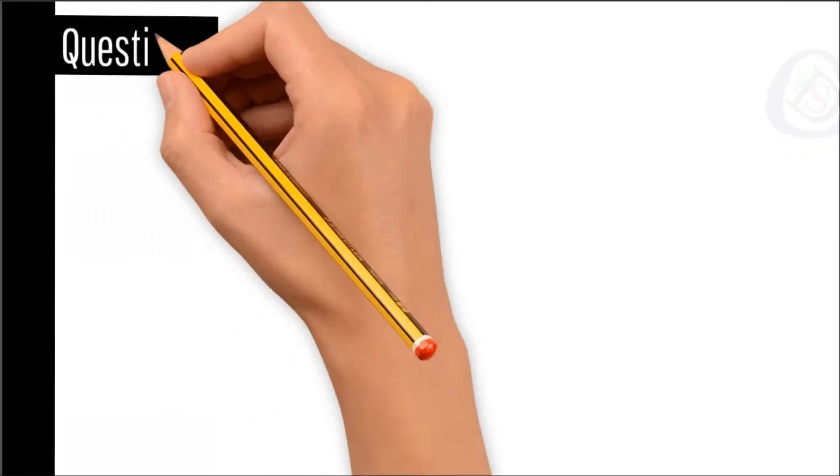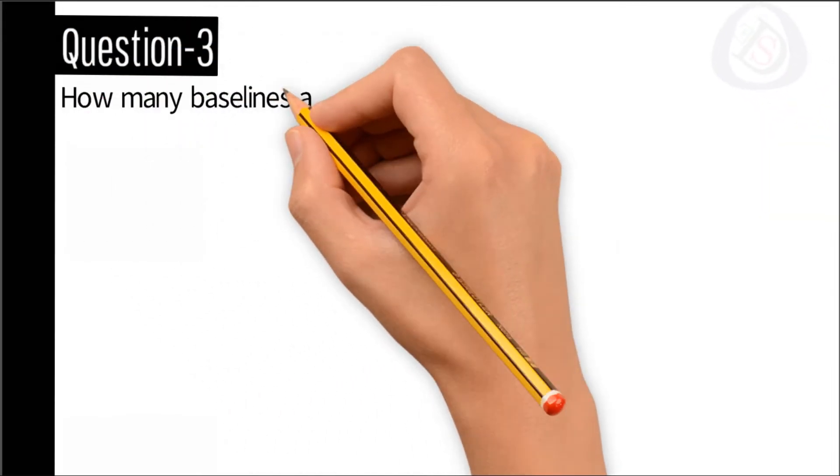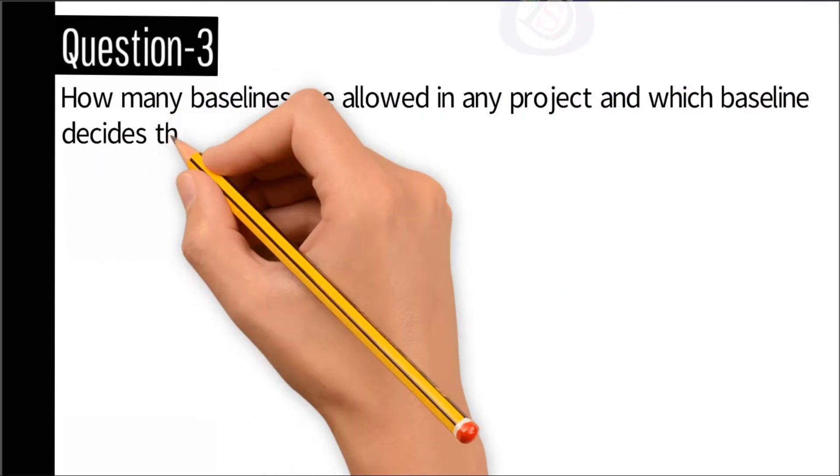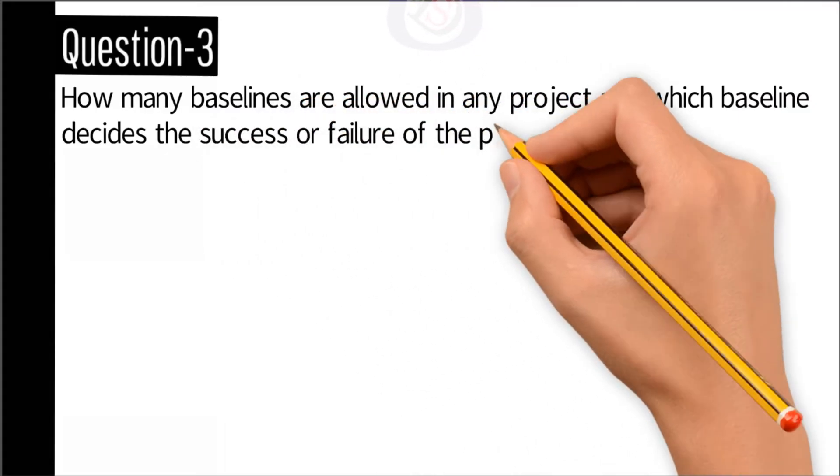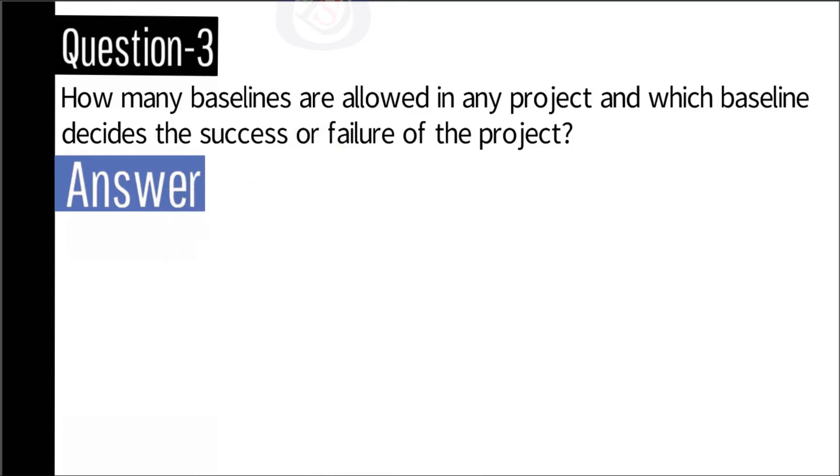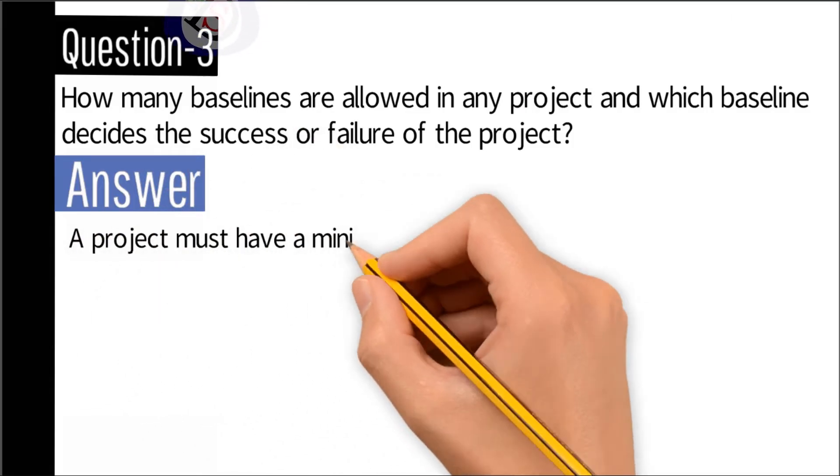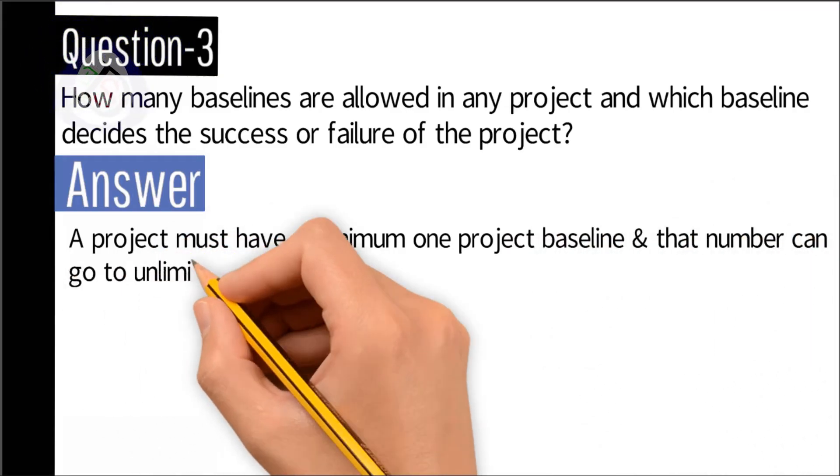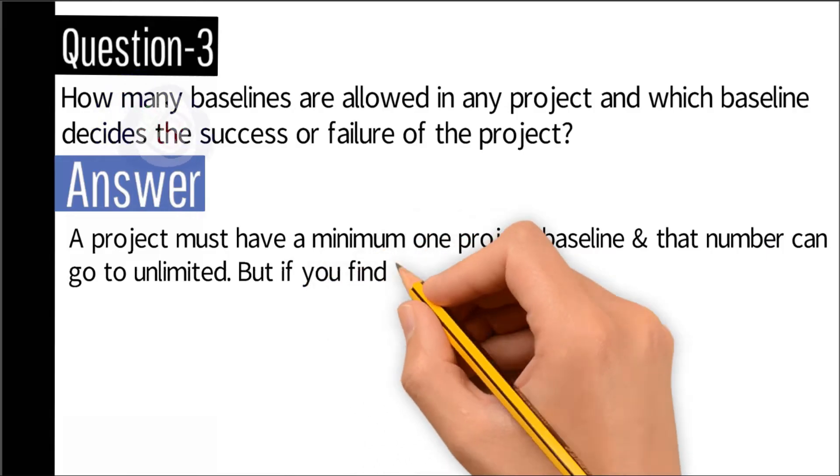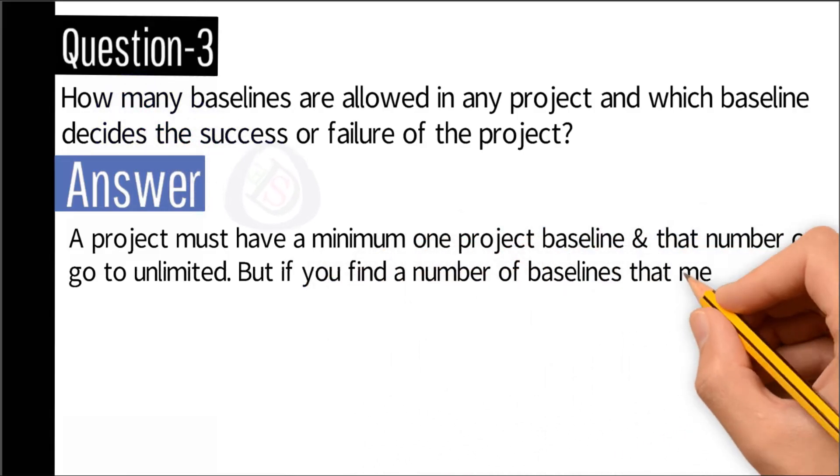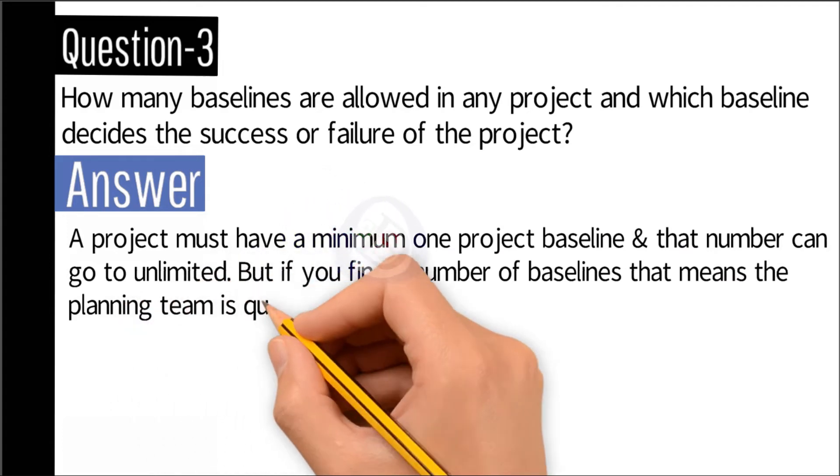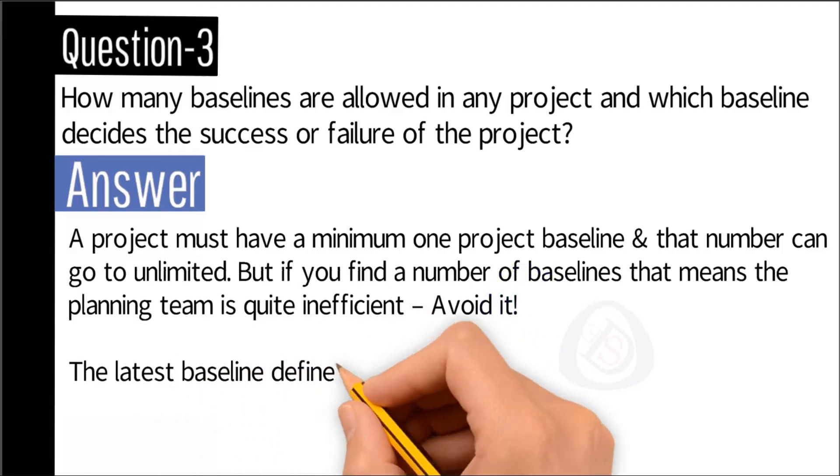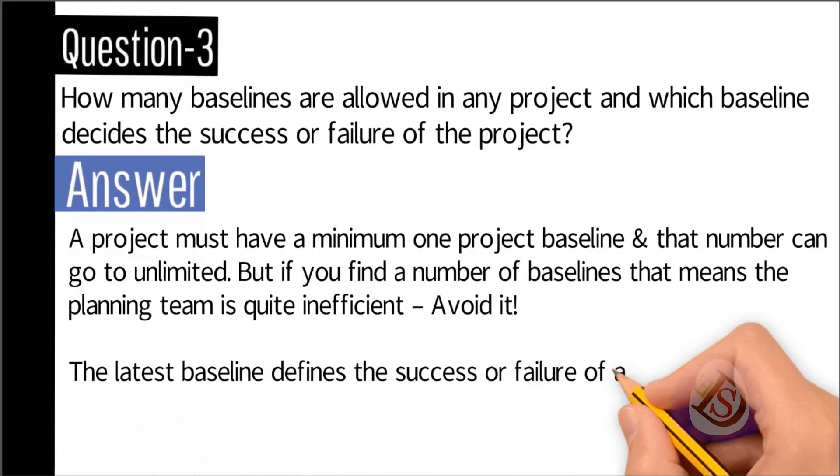Question number three: How many baselines are allowed in any project and which baseline decides the success or failure of the project? Answer: A project must have a minimum of one project baseline and that number can go to unlimited, but if you find a number of baselines, that means the planning team is quite inefficient. Avoid it. The latest baseline defines the success or failure of any project.